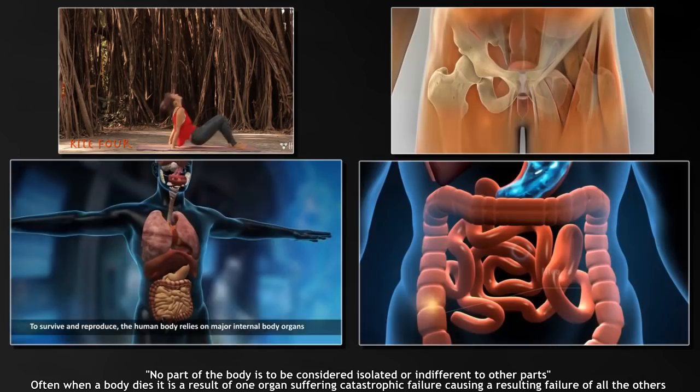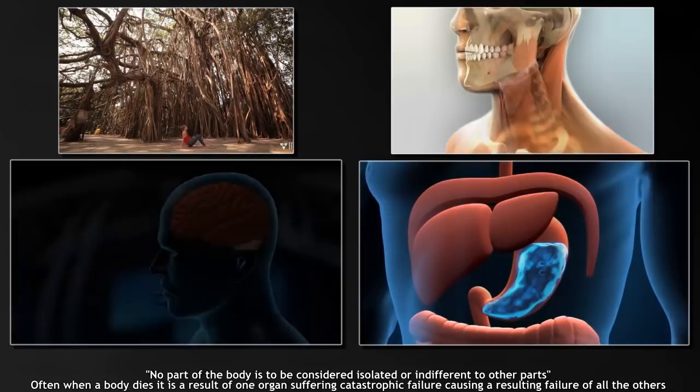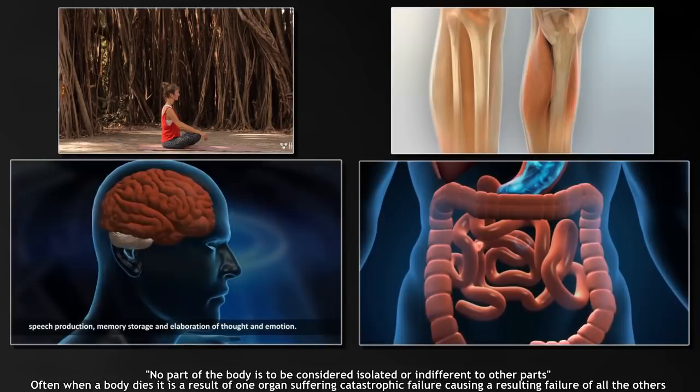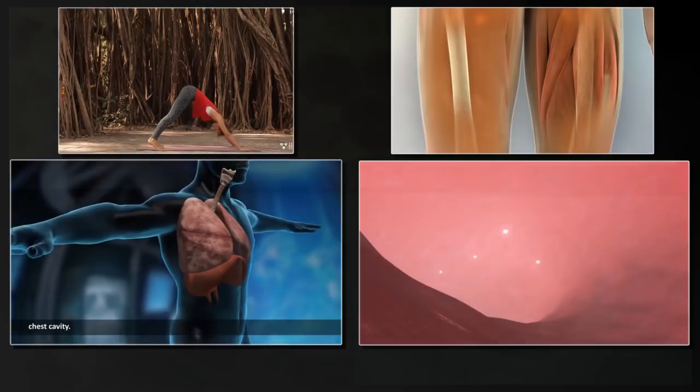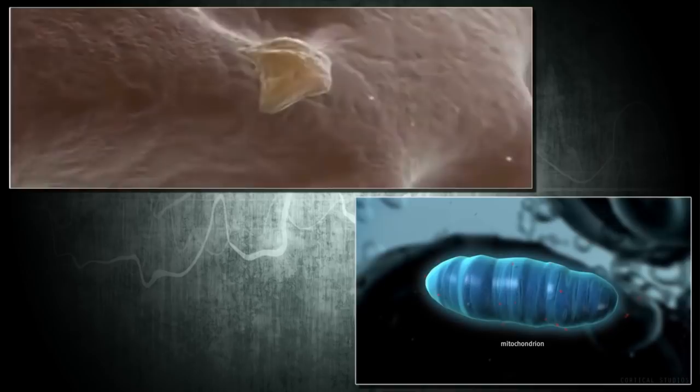No part of the body is to be considered isolated or indifferent to other parts. However, the mind of the human can be that. There can be a separation and a loss of this communication between all parts of the body, and all organs in the body, and all systems, even onto the cells and the reproduction of cells.